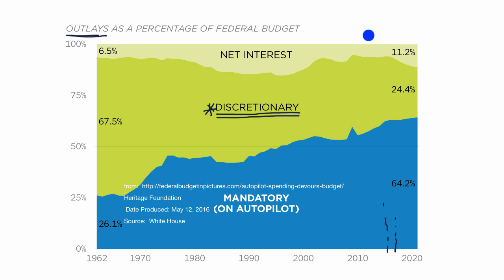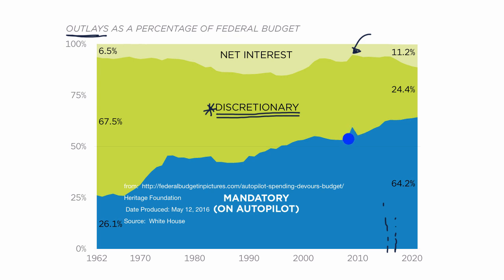Then there is net interest. The federal government has a debt, and anyone who has a debt tends to pay interest on that debt. Many people will often categorize this as a mandatory outlay as well because we need to pay the interest on that debt, even though it's not officially mandatory. To see how significant these entitlement programs are — not just on the federal government's budget, but as a percentage of GDP — we have another visual.